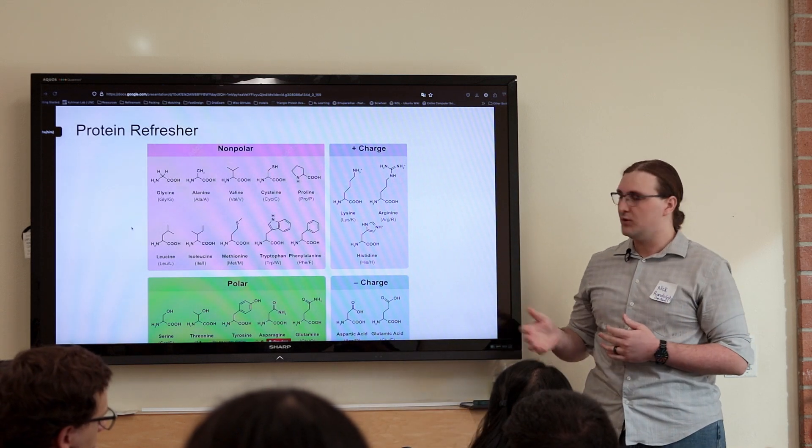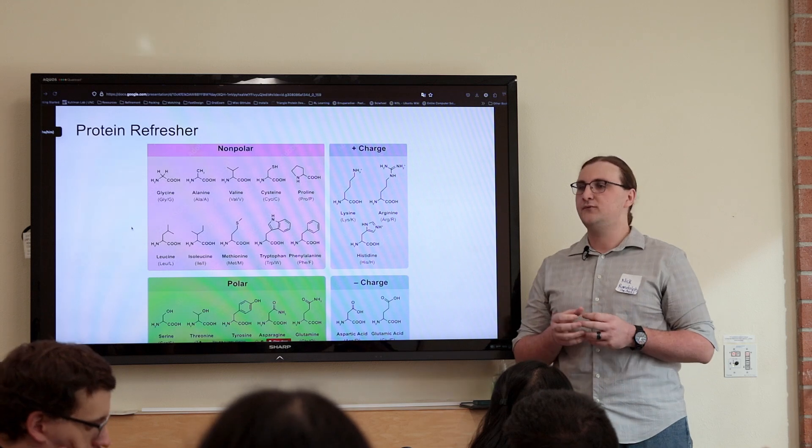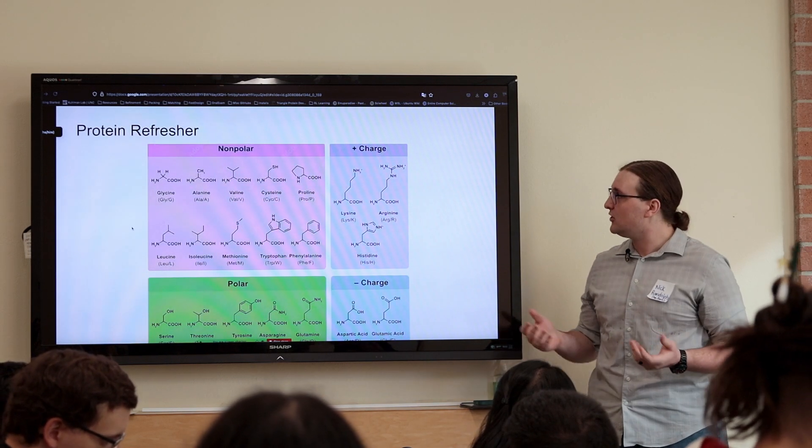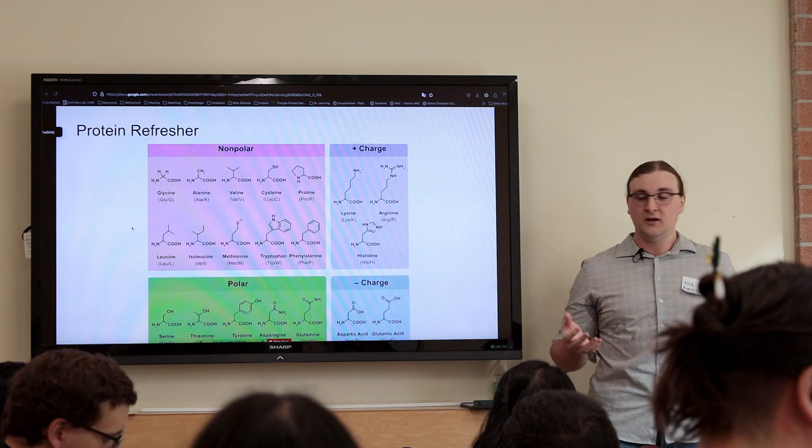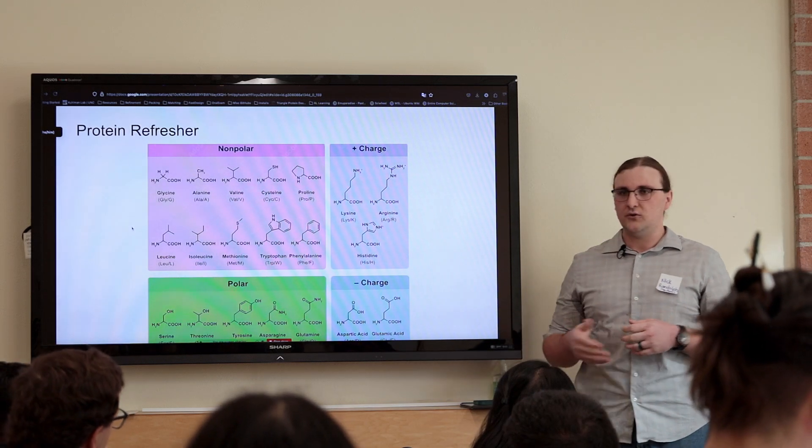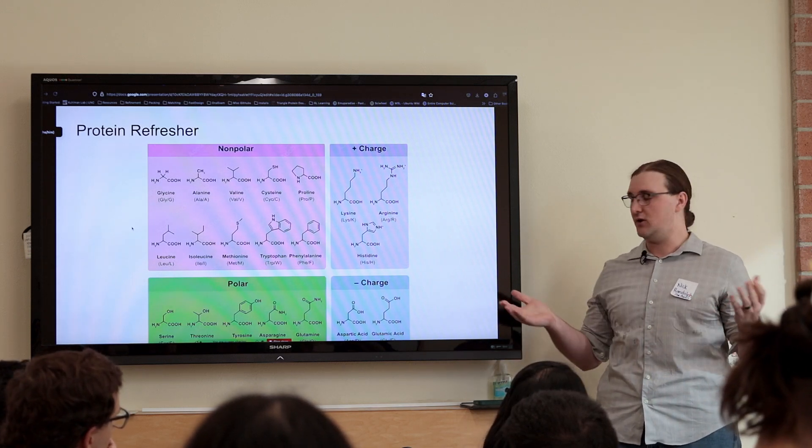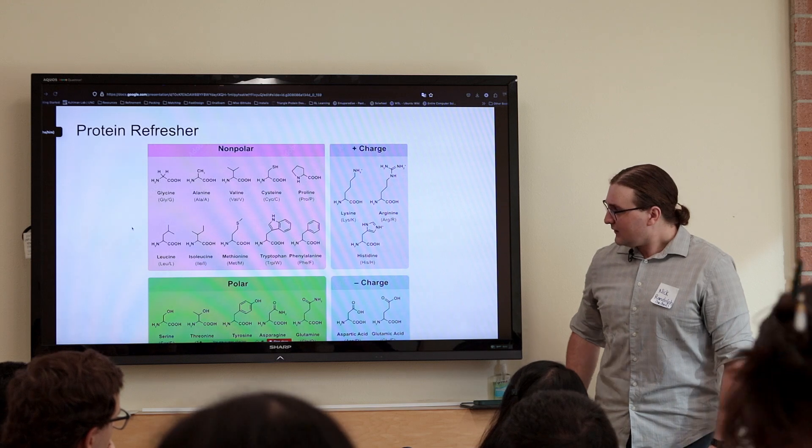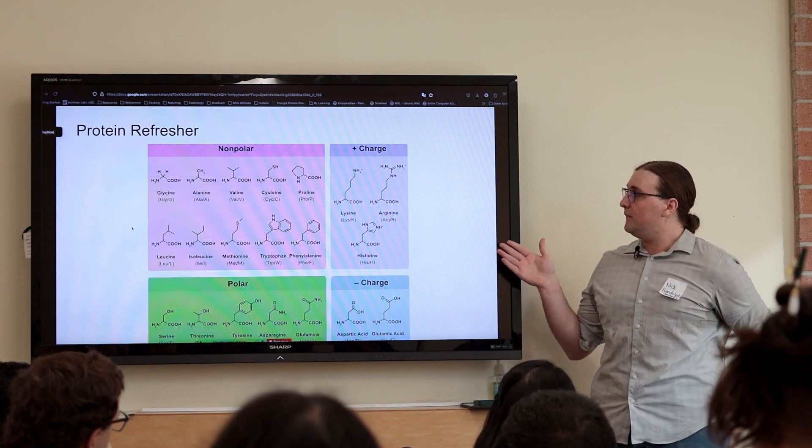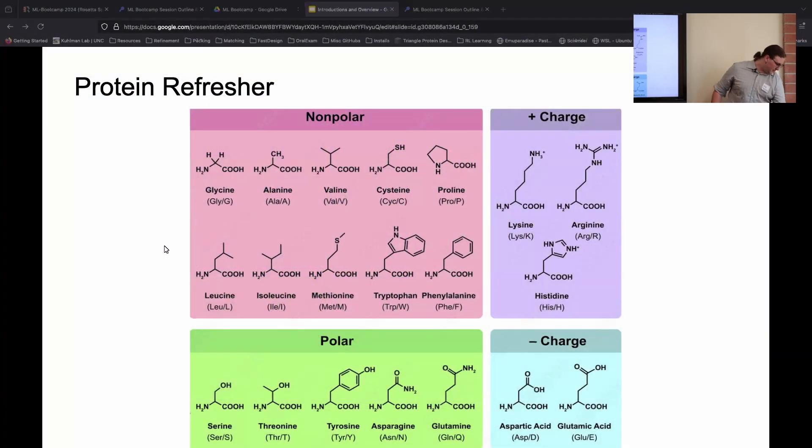There are some nonpolar ones that really are good for packing the core of a protein, excluding themselves away from solvents. There's some charged residues that are important for salt bridging and interactions with other residues and small molecules. Polar residues also are very common and really popular on the surface because solvent exposed and solvent is usually polar. These are the building blocks that we're going to be using throughout the week and each of these items are connected together to form a larger polypeptide.